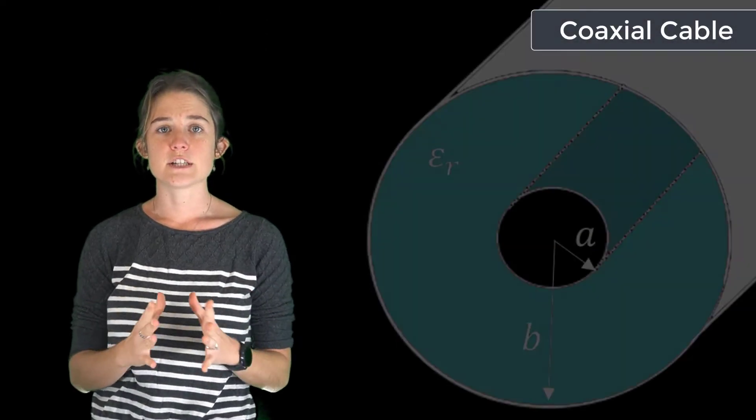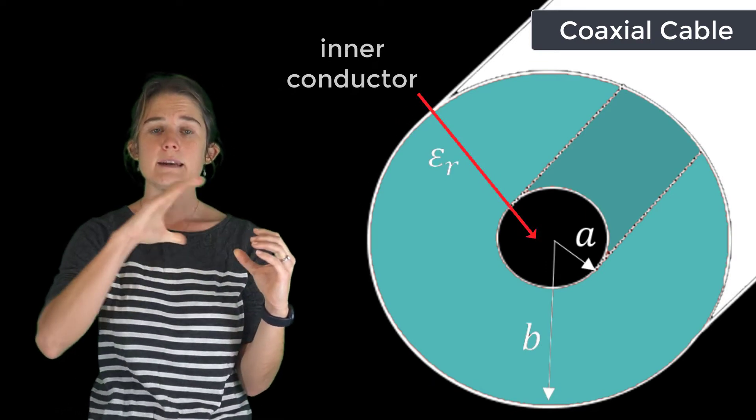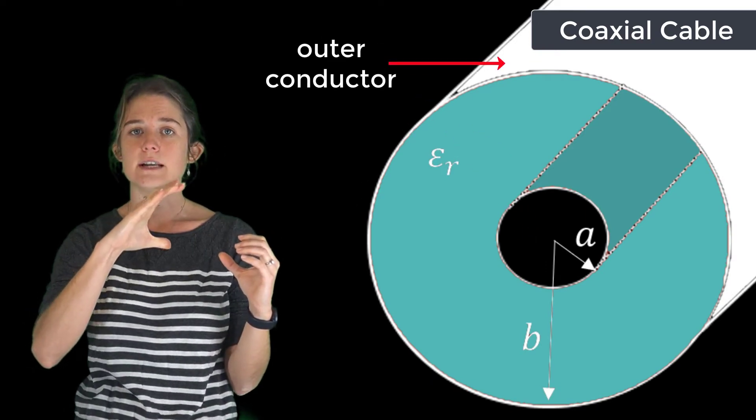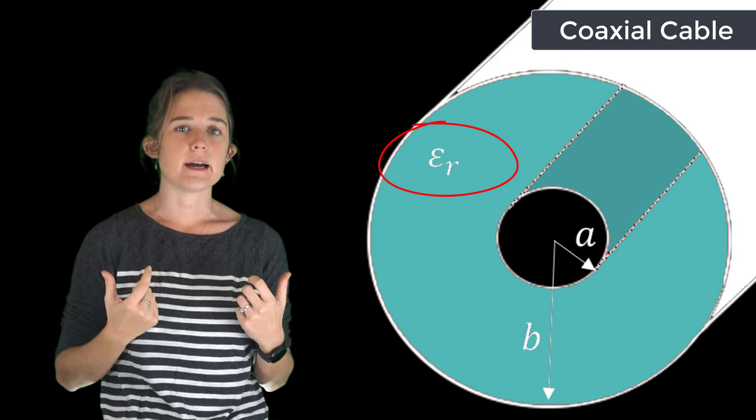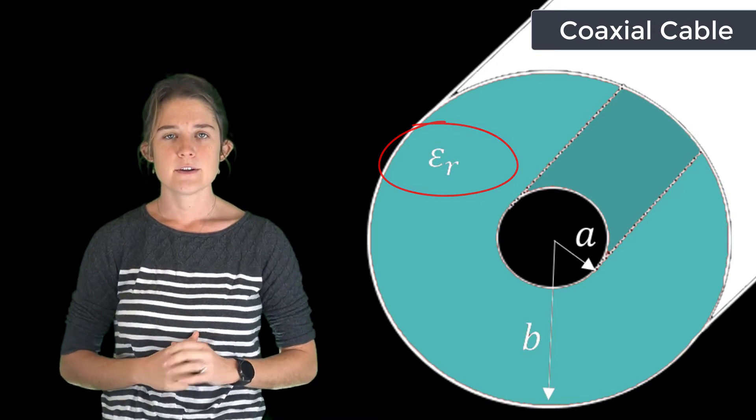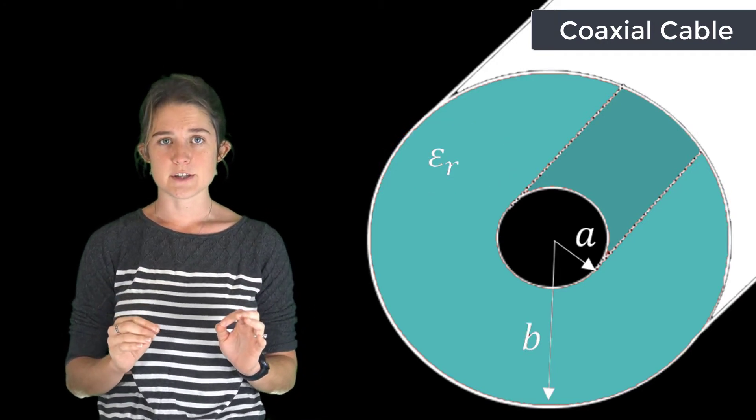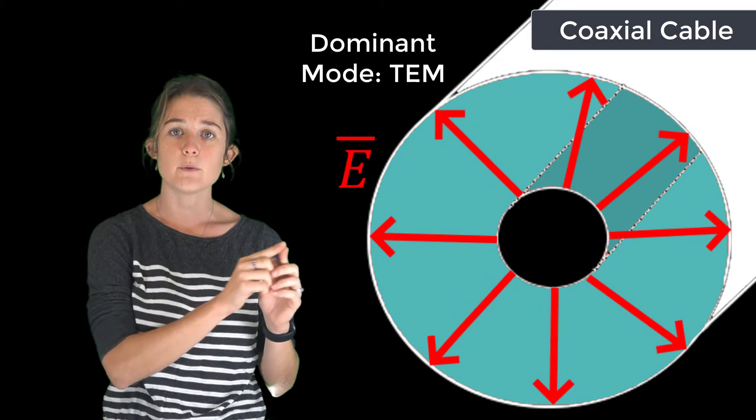The coaxial cable is a transmission line composed of an inner conducting wire of radius a and an outer conducting sheath of radius b. The space between the two conductors is filled with a dielectric having a relative permittivity of epsilon r. The dominant mode for this transmission line is TEM, with the electric field lines pointing from one conductor to the other and the magnetic field lines wrapping around the center conductor.